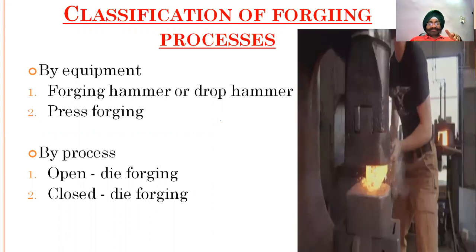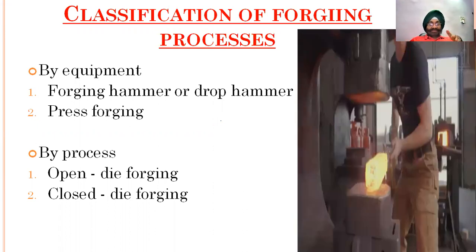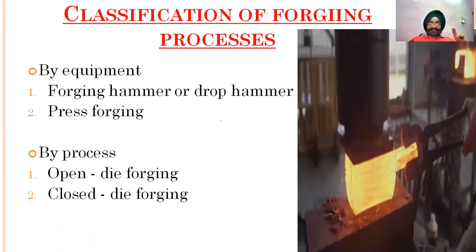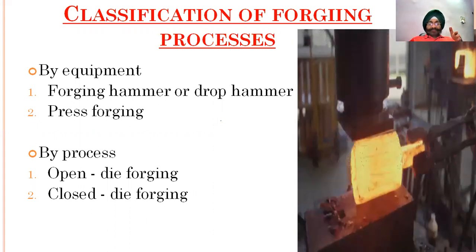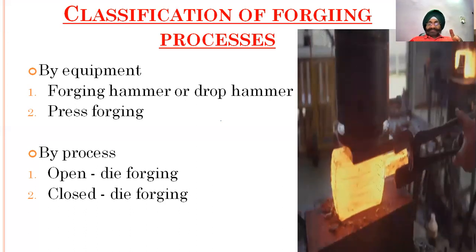If we look at the classification of forging processes, they can be classified in two ways: by equipment and by process. By equipment, forging is done using a hammer or drop hammer.